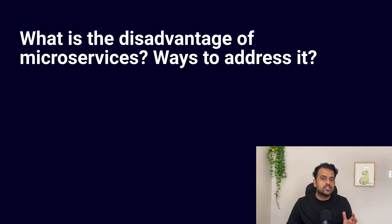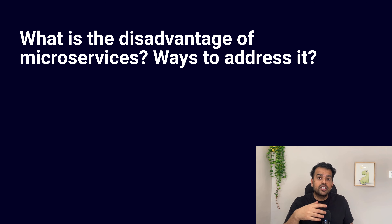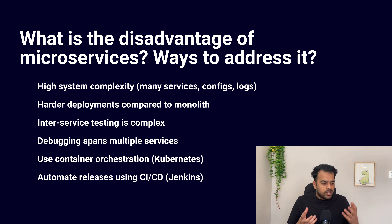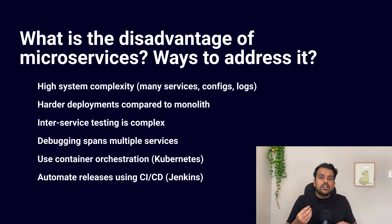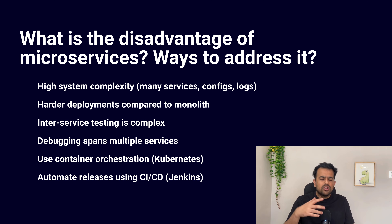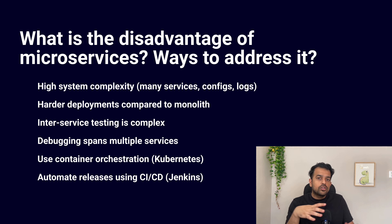Microservices sound very good on paper, but in real projects they also bring some clear problems. One big disadvantage is complexity. In a monolithic application you deploy one application, but in microservices you have to deal with many small services, each with its own code, its own configuration, its own deployment and its own logs. Because of this, deployment becomes harder — you do not deploy one jar or one war file. You deploy many services, so you must make sure all work together simultaneously for each release. Testing is also very complex — you cannot just run one integration test. You have to test each service and then test how they talk to each other.